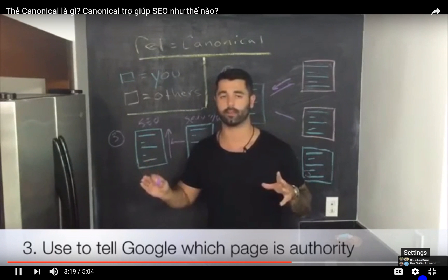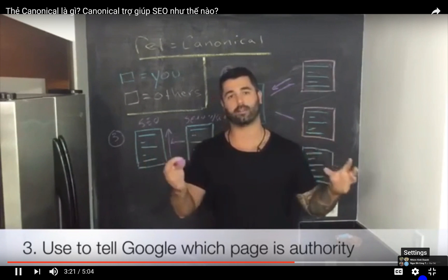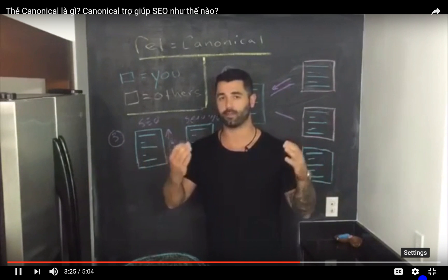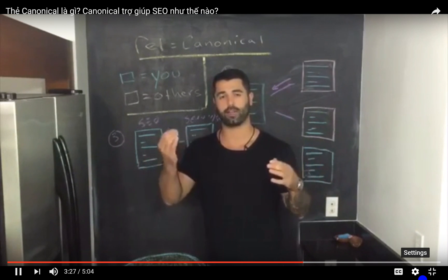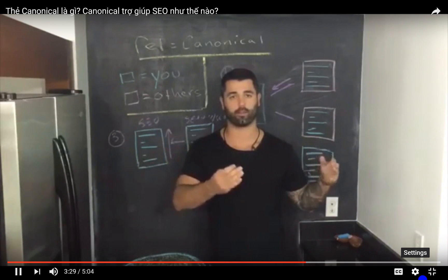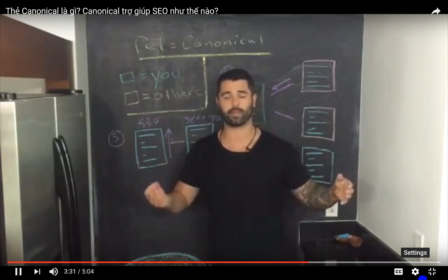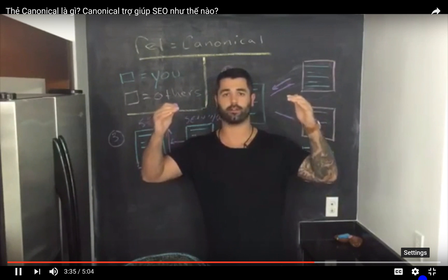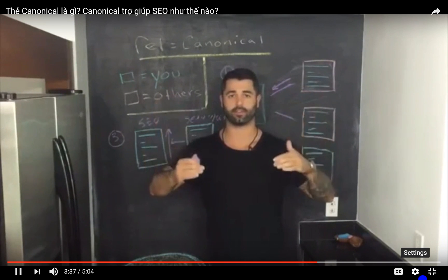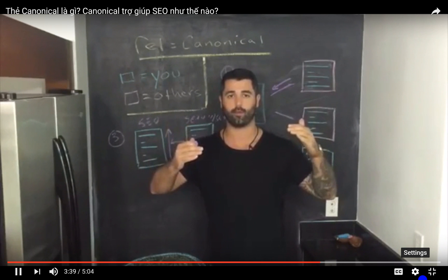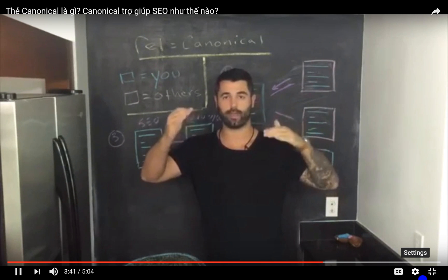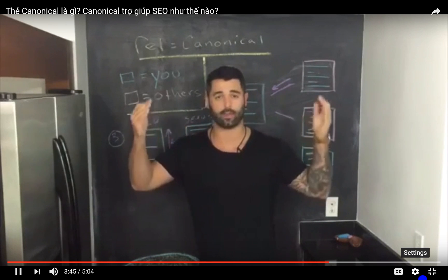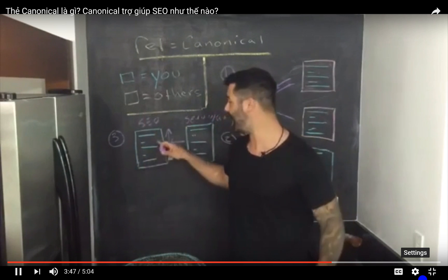The third scenario is actually internally within your own site. We use this on our own site because when you have two or multiple pages on your site that are very similar, you can use a canonical tag to tell Google which one is the authority. This is where people get tripped up with Panda penalties — you might have two pages all about SEO services, they might not be verbatim the same, but when Google is ranking one of those pages, how do they know which one to pick? They can't, so they don't rank either of them.